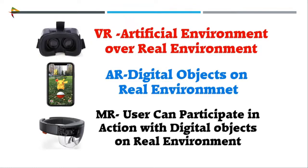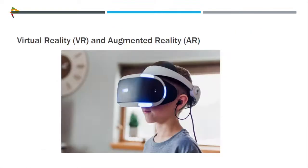Simply put, VR is nothing but artificial intelligence over the real-world environment. AR means a digital object is present in your real-world environment. In MR, the user can participate in mixed reality and interact with digital objects in the real environment. Virtual reality requires external hardware to access, but augmented reality does not need any external devices.